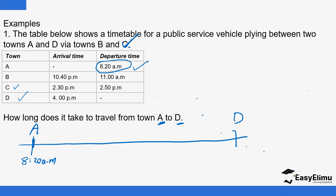At D, the arrival time is 4:00 PM. This is in the second half of the day, which started from noon, so it's 4 hours past noon. To find how much time this journey took, you need to find the time from 8:20 AM to noon, then add the time from noon to 4:00 PM. From noon to 4:00 PM is 4 hours.